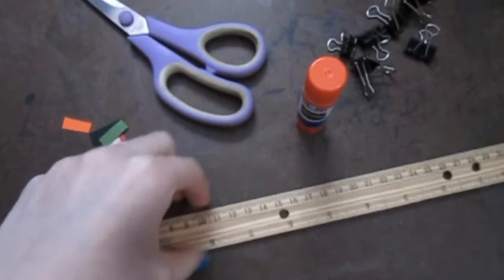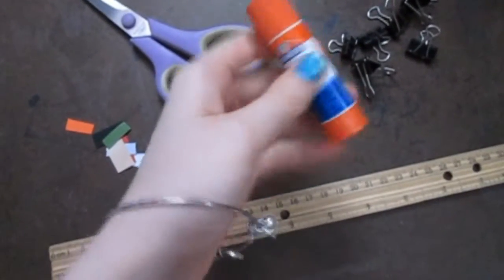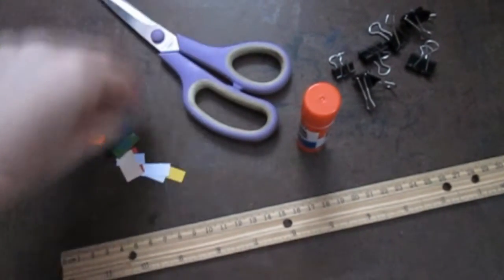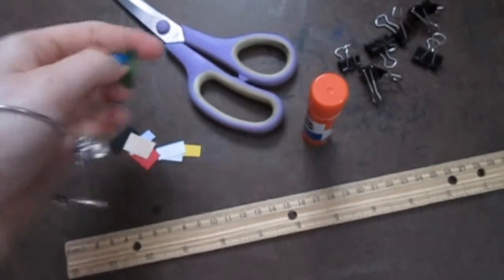You'll need a ruler to measure with, a glue stick, little clips, scissors, and some pieces of paper in the colors you want the chalks in.